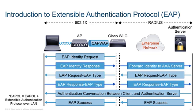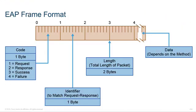EAP attempts to keep things as simple as possible. Looking at the EAP frame format: the first byte specifies whether this is a request, a response, a success, or a failure. The next one-byte field is an identifier to match the request and response — confirming the EAP type is supported on both sides. There is a two-byte total length field, and then there may or may not be data, depending on the authentication method being used.